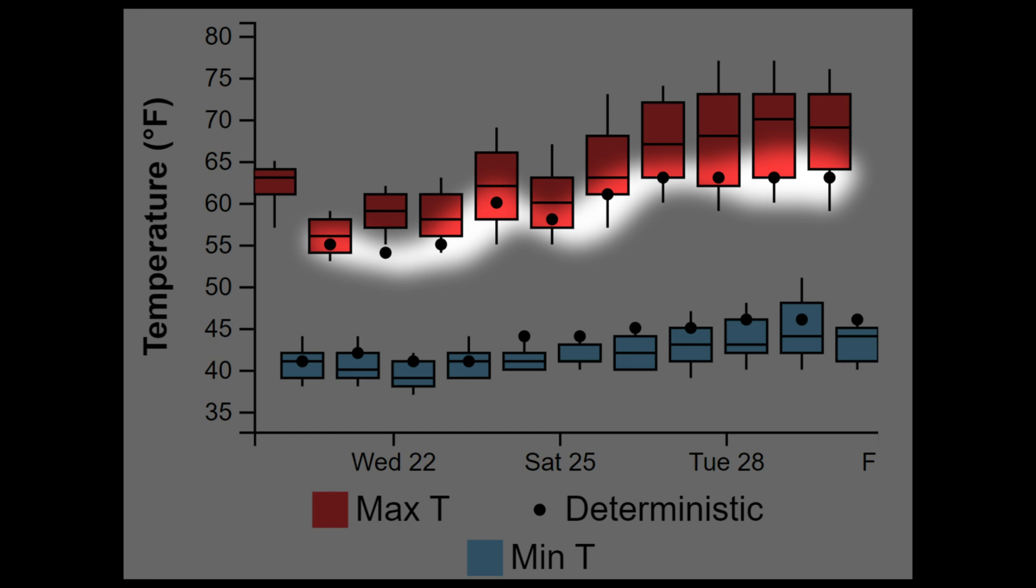There could be something causing the deterministic values to fall out differently because of the shorter bias correction window or different members used for the calculation.